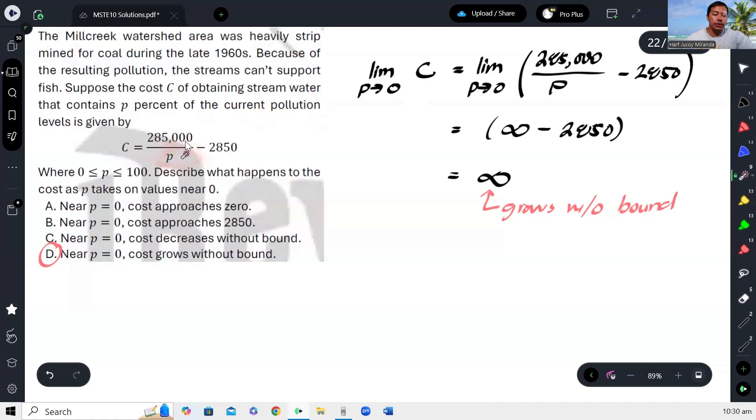So, as the pollution becomes 0, the cost of obtaining stream water increases without bound. So, that is what this formula means. Okay? And that's how we solve this problem.